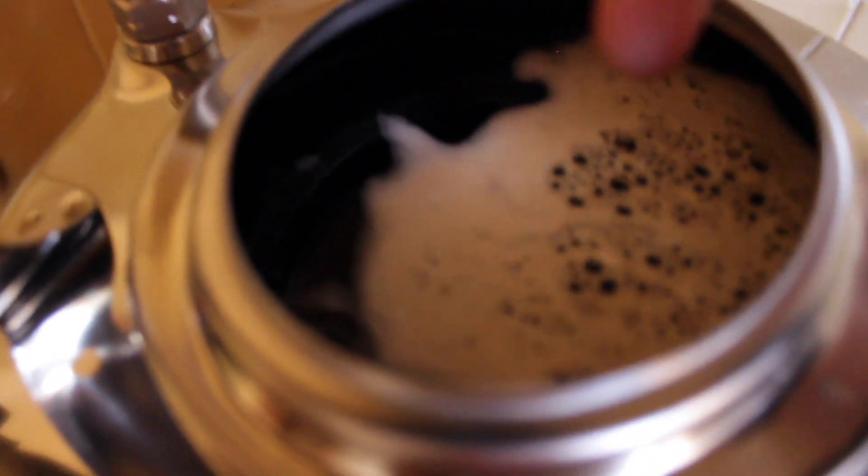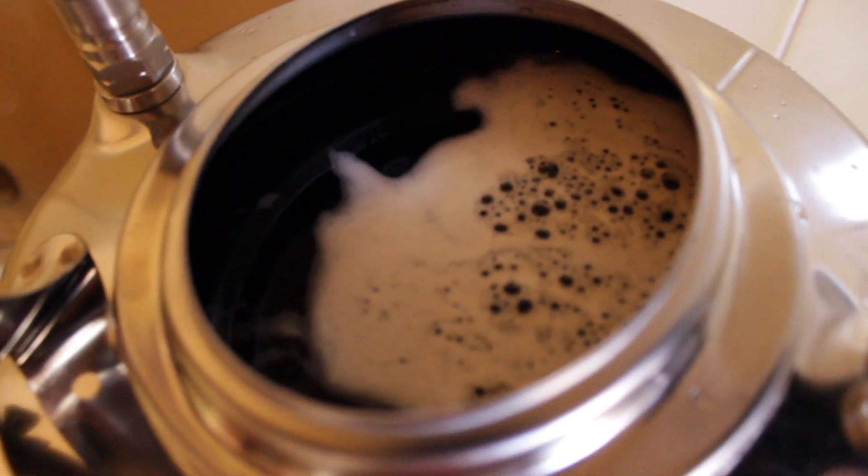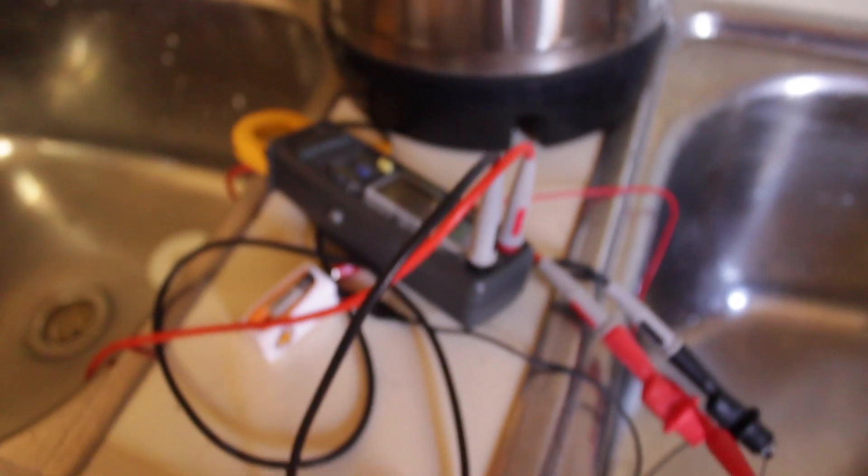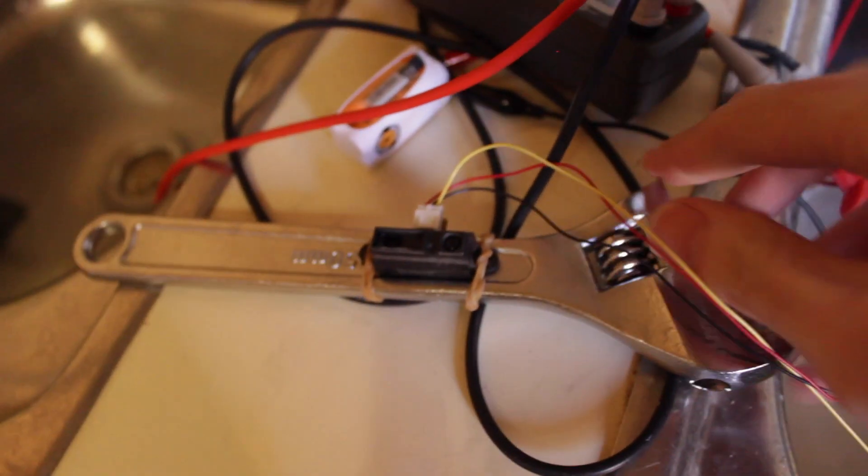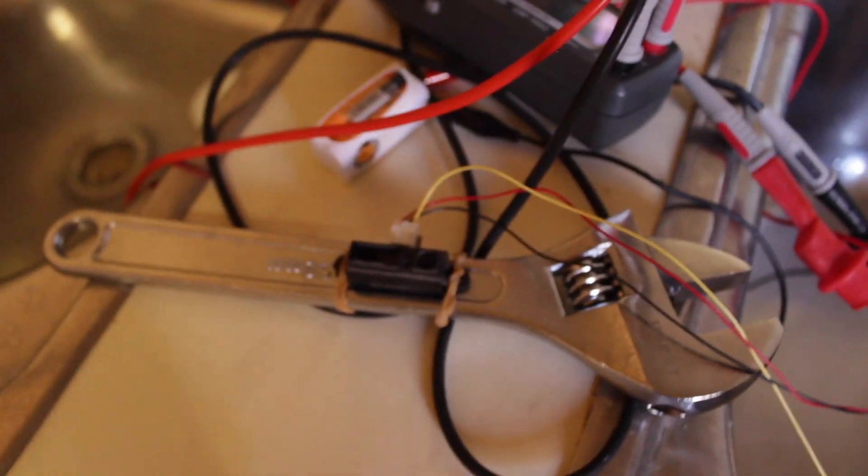But as far as detecting how much is remaining in your kegs I just don't think these little sensors are going to be the right way to go about it so I guess we'll just stick with the old scales instead.